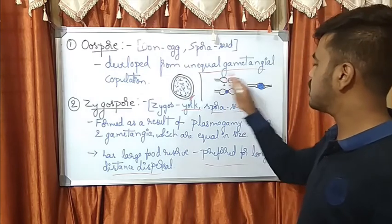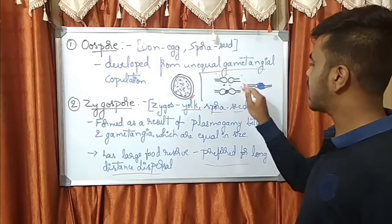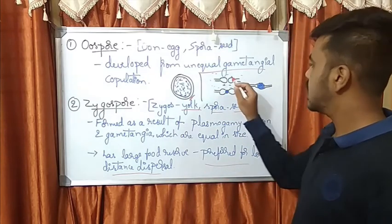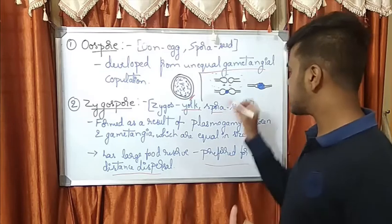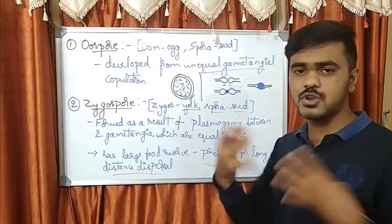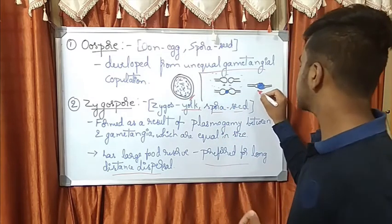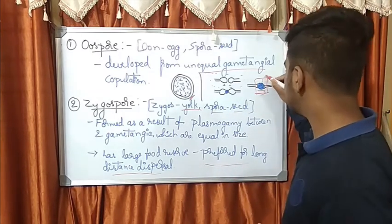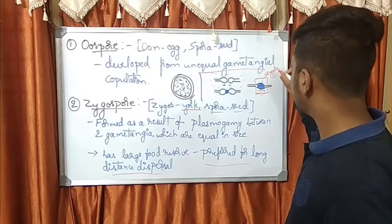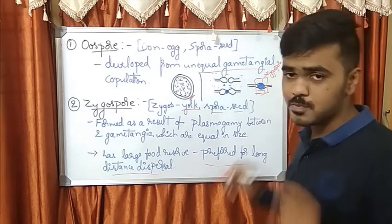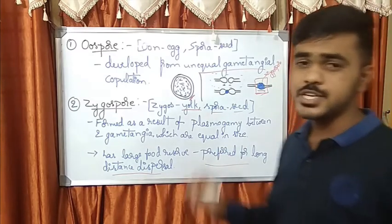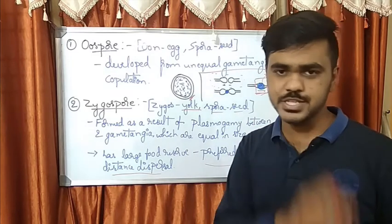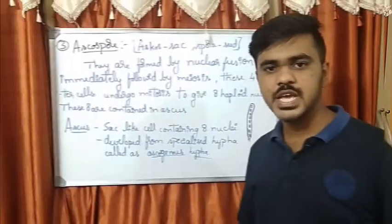These zygospores are usually preferred for long distance dispersal. I will explain how this spore forms. I hope you remember this structure where I have drawn while explaining gametangial copulation in the isogamous condition. The opposite poles come near and the fusion of plasmogamy takes place. As a result, they develop a spore in between them - that is the zygospore. This is the normal condition in the Zygomycetes and it is usually preferred for long distance dispersal and has very large food reserves.